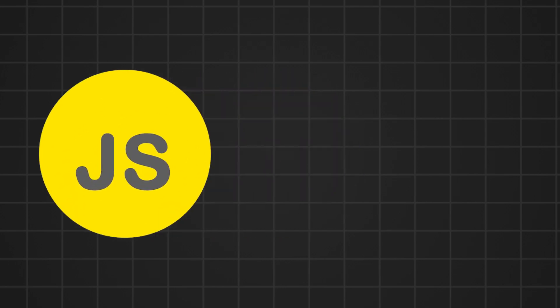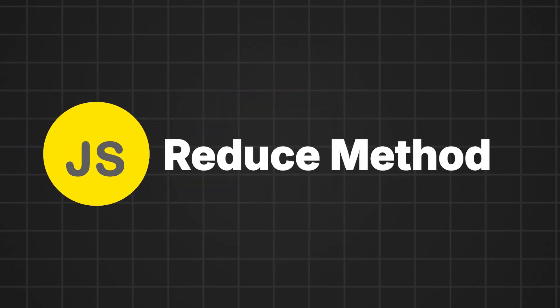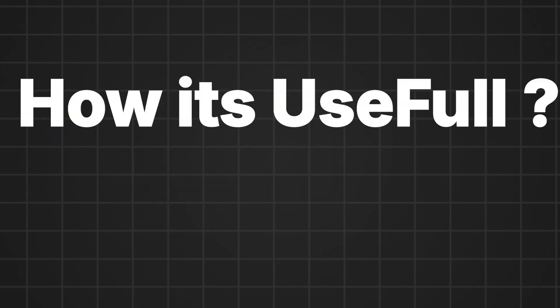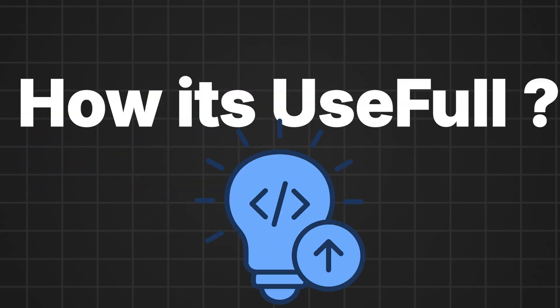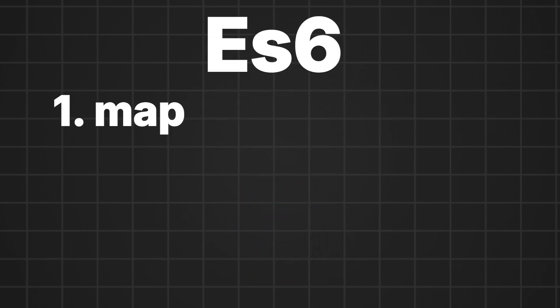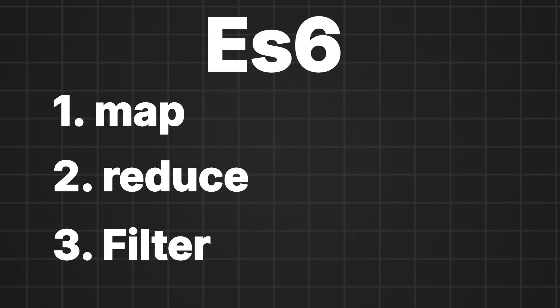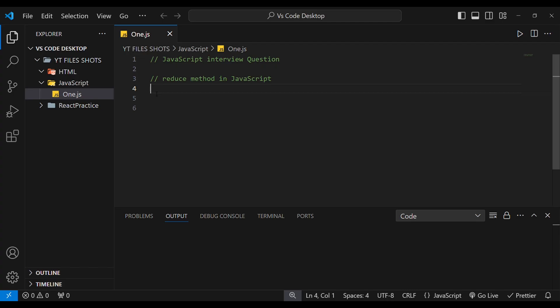In JavaScript, we have the reduce method. We also have to use the ES6 reduce and filter methods. We have to use arrow functions. Arrow functions are an advantage.